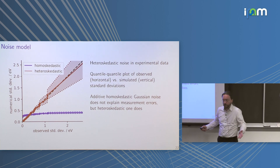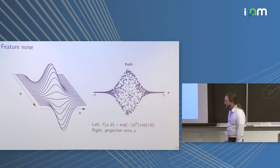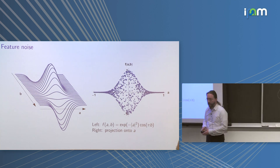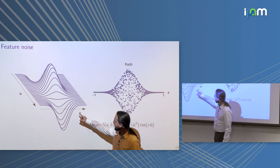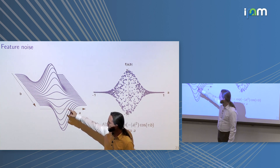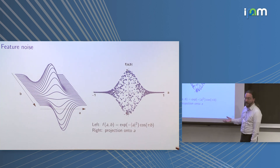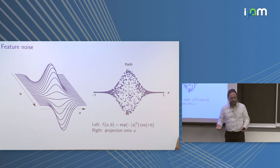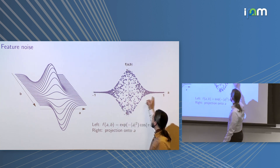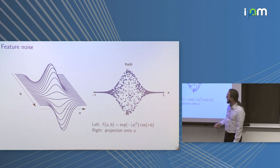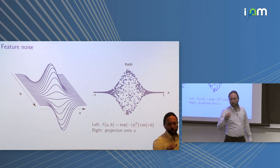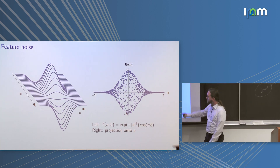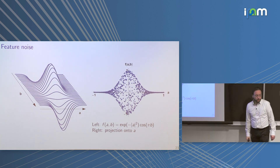Another source of approximation uncertainty is missing features. Using a toy two-dimensional function as an example: if you only observe dimension A and project onto it, you see that the error is very small in some regions and very large in others, but you cannot determine why, because you lack access to the second axis. In experimental data, you almost never have complete information, so missing features producing a strong apparent noise signal is something that actually happens frequently.